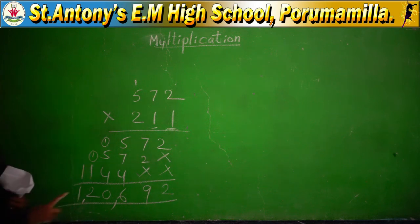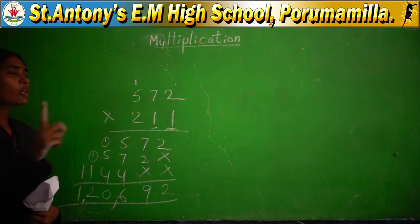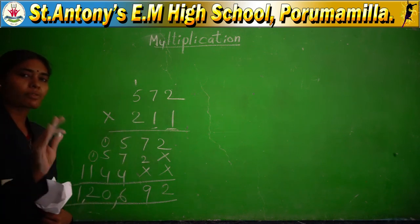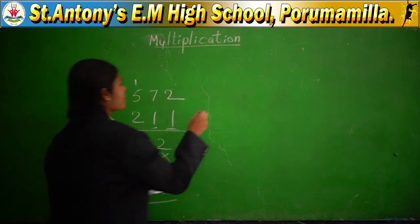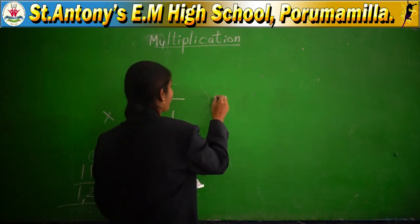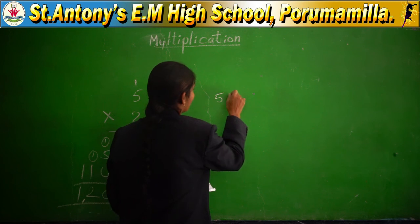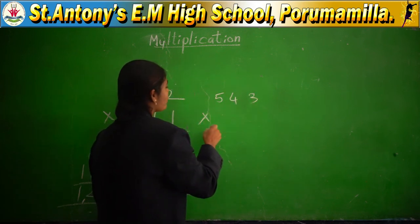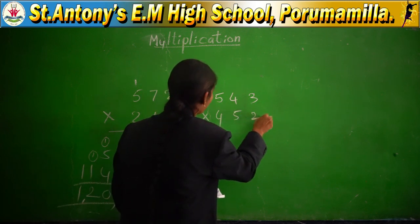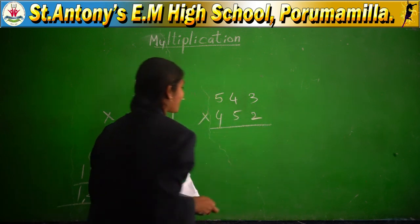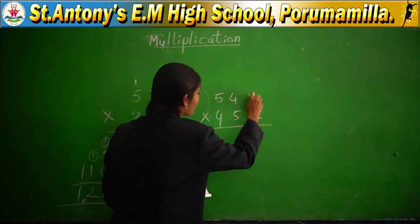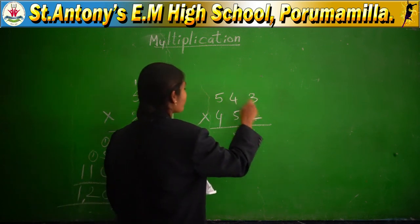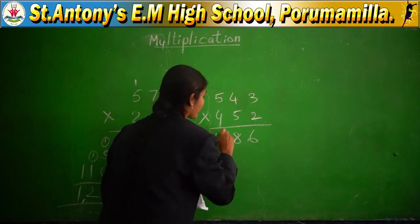One more example I will explain — a simple problem first so you understand the method. Take 543 into 452. Start from the 1's place: 2 threes are 6, 2 fours are 8, 2 fives are 10. Write 10 directly because there is no more digit after 5 with this single multiplier digit. Keep the into marker at the 1's place.